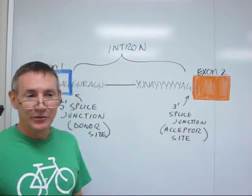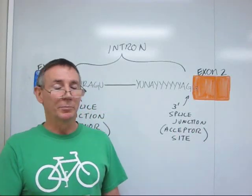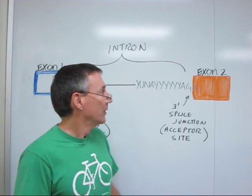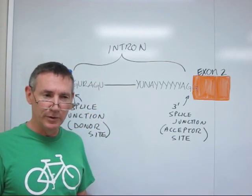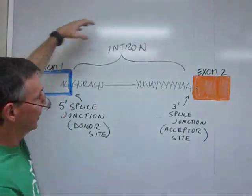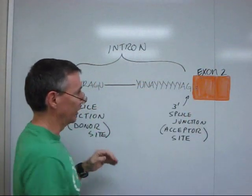We're going to look at the process of removal of an intron and splicing of two exons together. So what we have here is a consensus intron from a typical eukaryote. You've got here's one exon, here's the other exon, the intron in between.